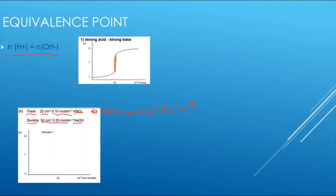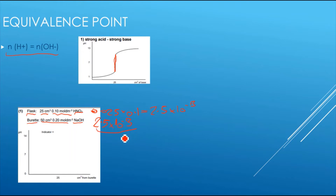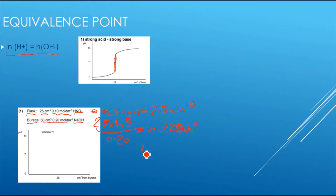Because the burette may have the base in excess, we need to find the volume of base required for neutralization. We divide the moles by the concentration of the base: 2.5 × 10⁻³ ÷ 0.2 = 0.0125 dm³. Remember the graph uses cm³, so multiply by 1000 to get 12.5 cm³.